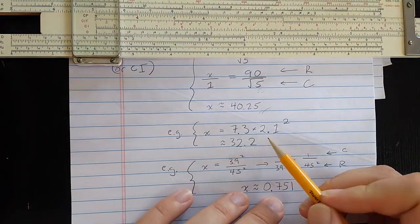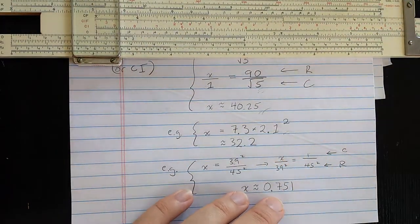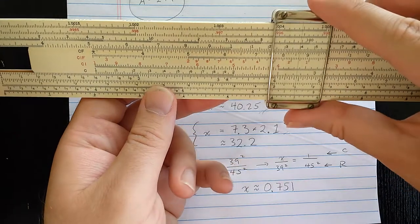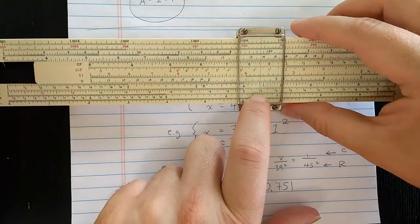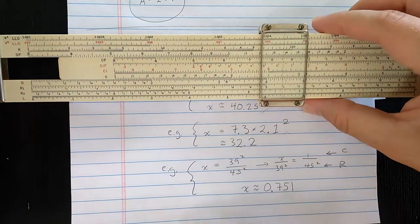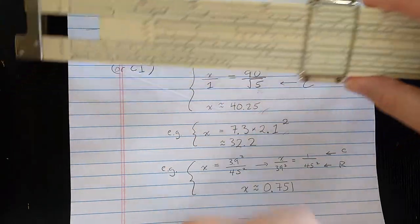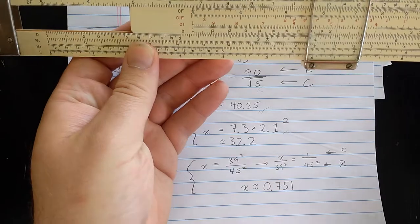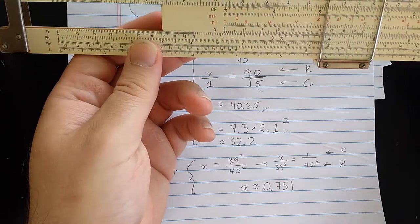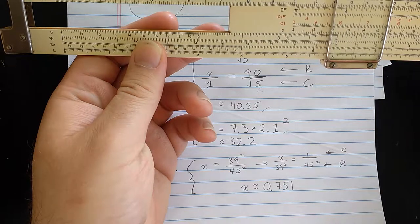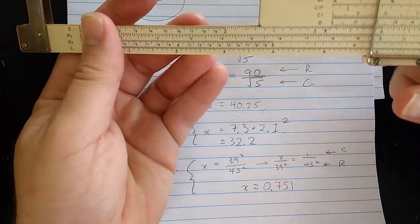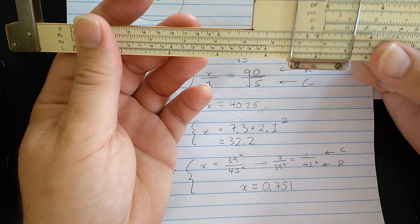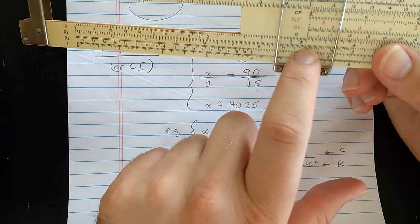Let's think about how to do something like 7.3 times 2.1 squared. This is a lot like computing the area of a circle. I could find 2.1 on the R scale. Finding that there on R1, 2.1. So then D should read the square of 2.1. So, I could multiply by, say, aligning the 7.3 with the hairline on the CI scale. Then coming out to the end here and reading results, 32.2 off of the D scale there.